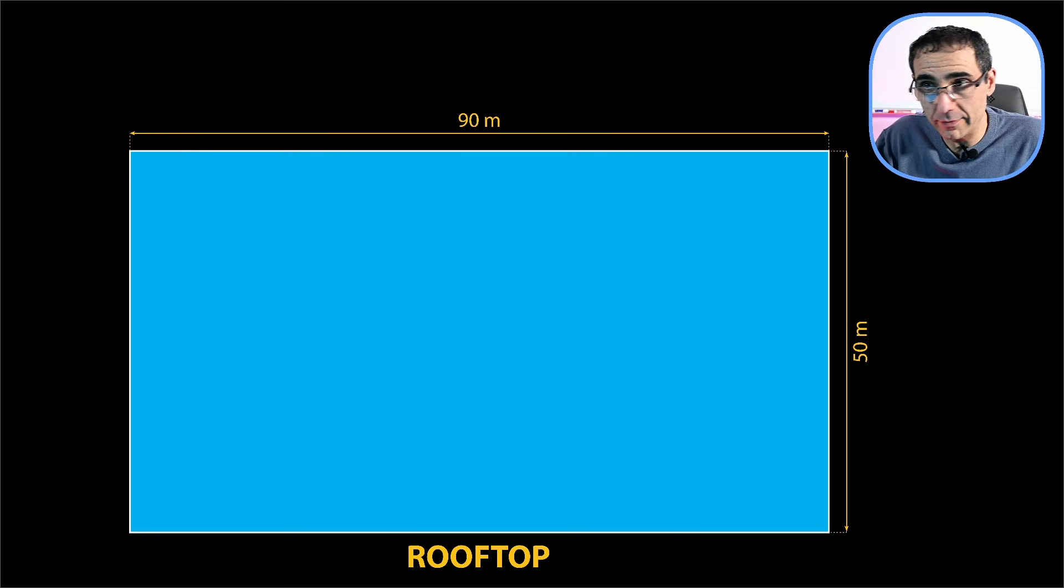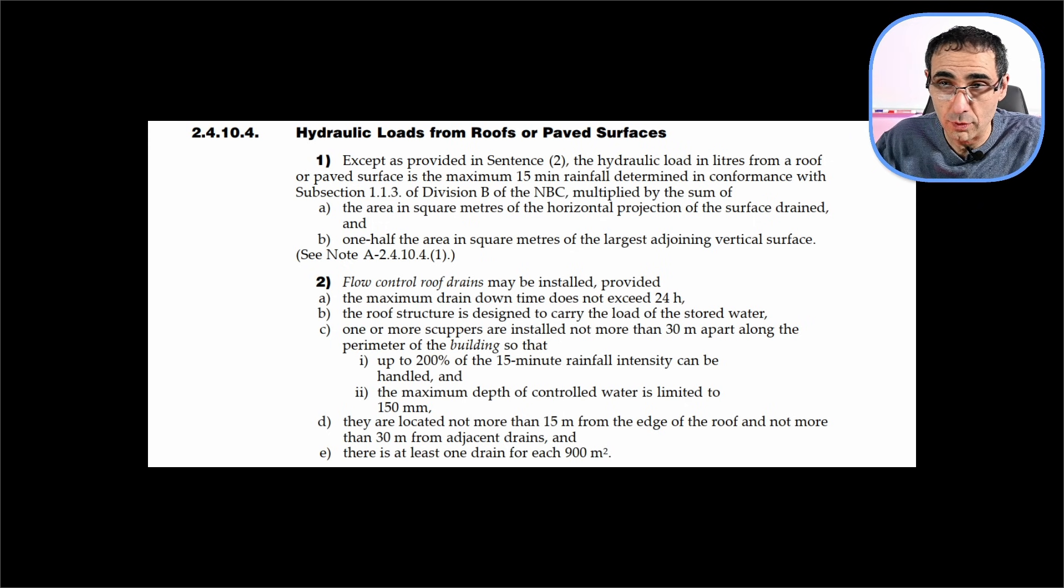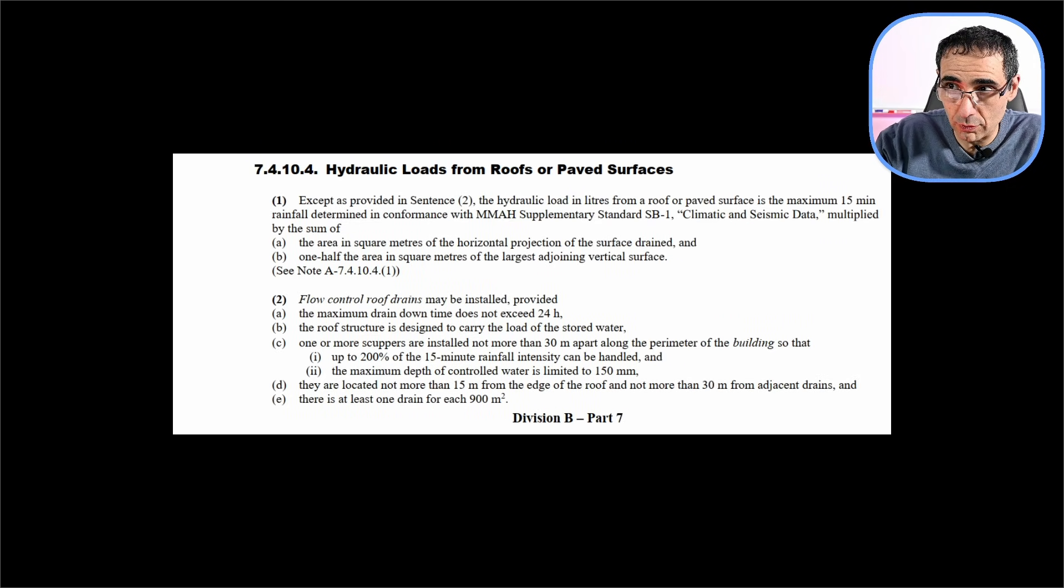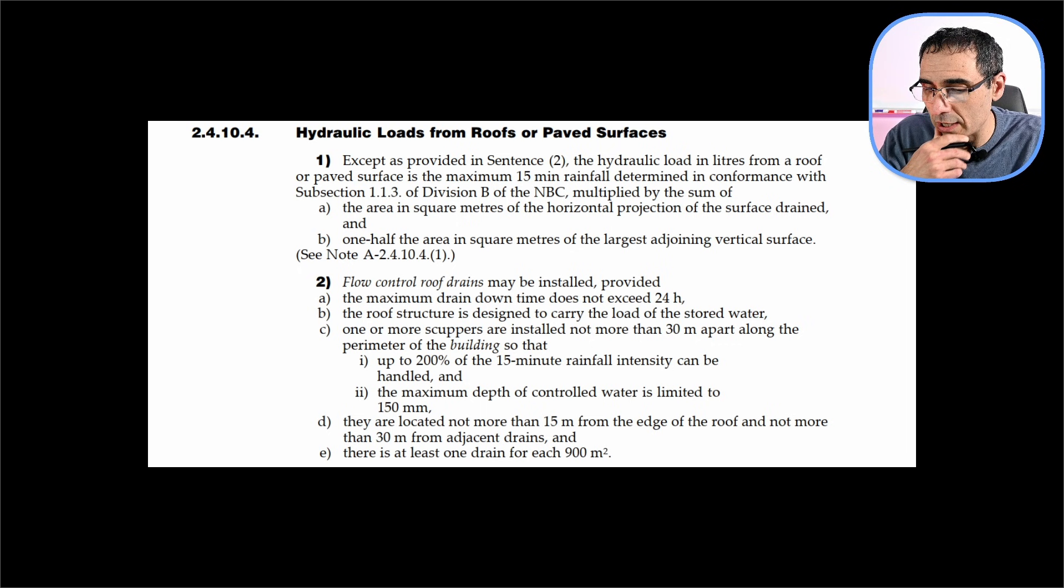And you need to abide by the code, and we need to first see what the code says. Now we've got, I'm in Ontario, we've got the Ontario building code, and then there's also the national building code. Fortunately, they mimic each other very closely. They're not identical, but they're very close. So let's take a look at first the national building code, which starts with a 2. This is 2-4-10-4, just the same. This is the provincial building code 7-4-10-4.